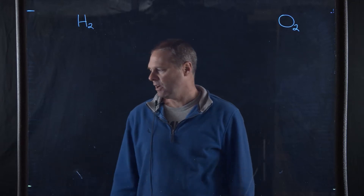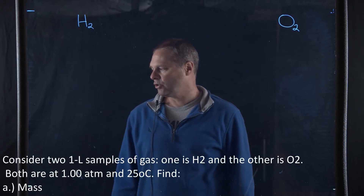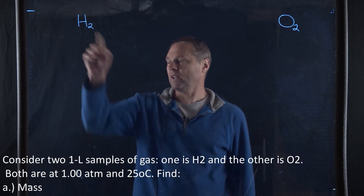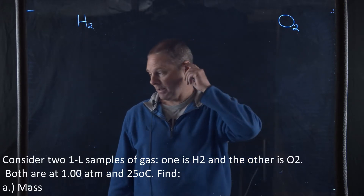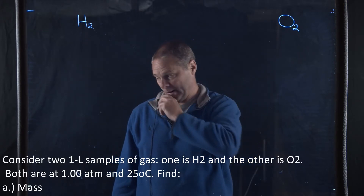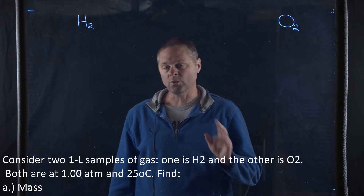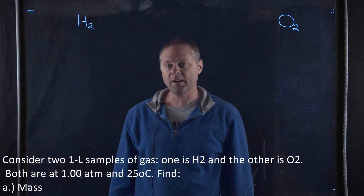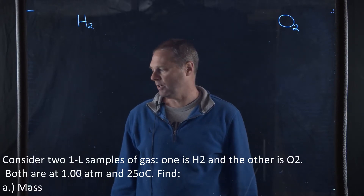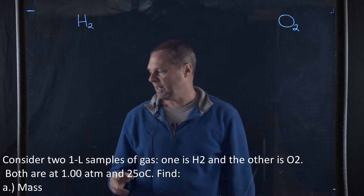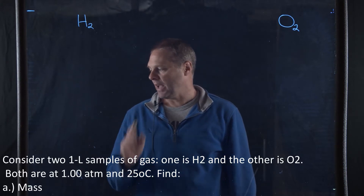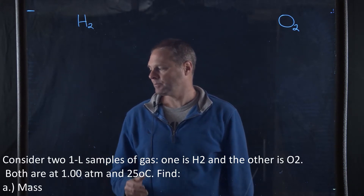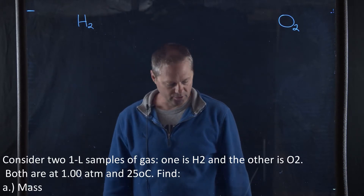In this problem, it states: consider two one-liter samples of gas. One is hydrogen, the other is oxygen. Both are at one atmosphere and 25 degrees Celsius. How do the samples compare in terms of the mass, the density, the average molecular speed, and the average molecular kinetic energy?